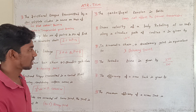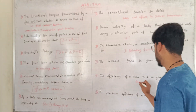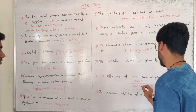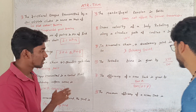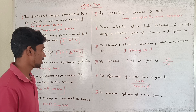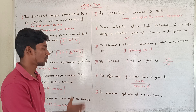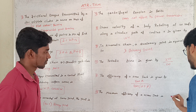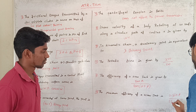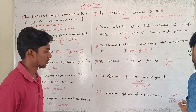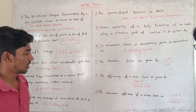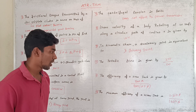The efficiency of a screw jack is given by tan α divided by tan(α plus φ). The maximum efficiency of a screw jack is given by 1 minus sinφ divided by 1 plus sinφ.